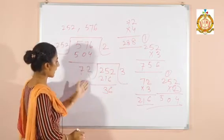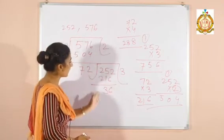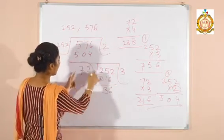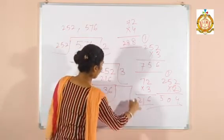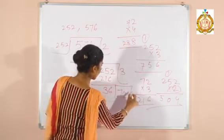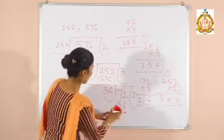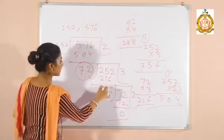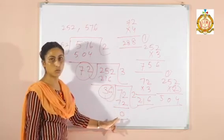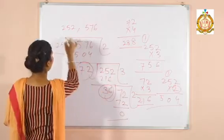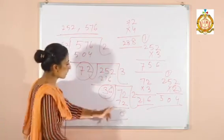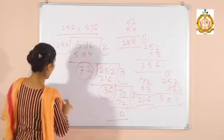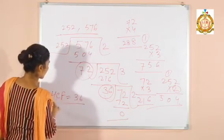The next step is to divide the second divisor by the second remainder. Here the second remainder is 36. Divide the second divisor 72 by 36. 72 divided by 36 gives 2 exactly, so the remainder is 0. The divisor that gives remainder 0 will be your HCF of the given numbers. Since 36 has completely divided 72, HCF equals 36. This is your answer.